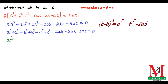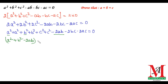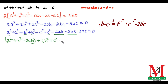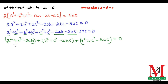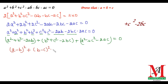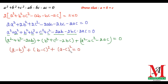Rearranging the terms: first we write a squared plus b squared minus 2ab to obtain a perfect square formula. Then b squared plus c squared minus 2bc to obtain another formula. And we are left with a squared plus c squared minus 2ac equals zero. We see that a squared plus b squared minus 2ab is the formula for (a minus b) whole squared, b squared plus c squared minus 2bc is (b minus c) whole squared, and a squared plus c squared minus 2ac is (a minus c) whole squared.